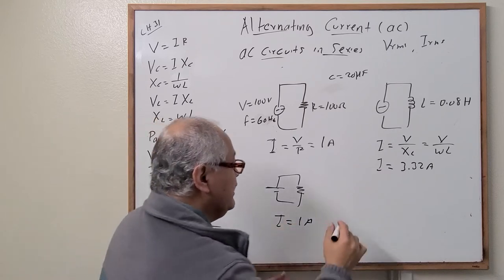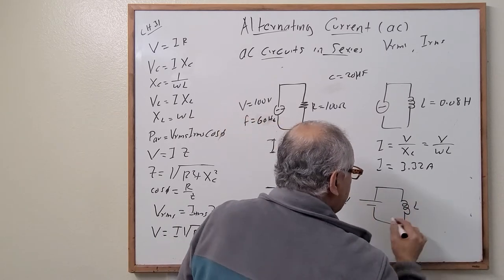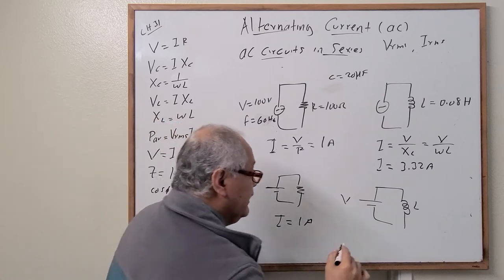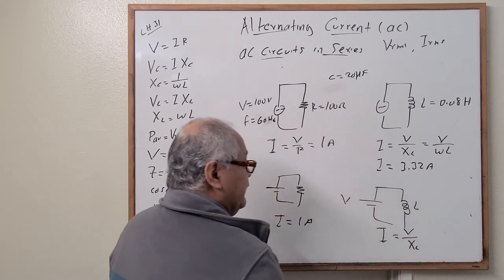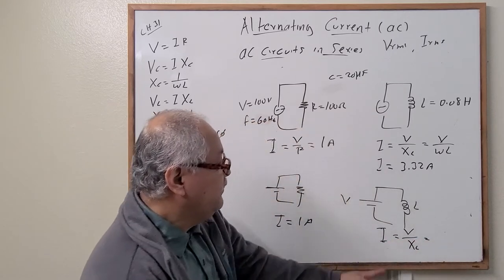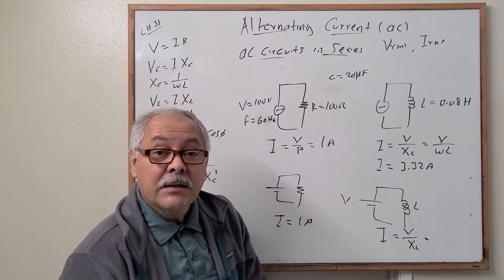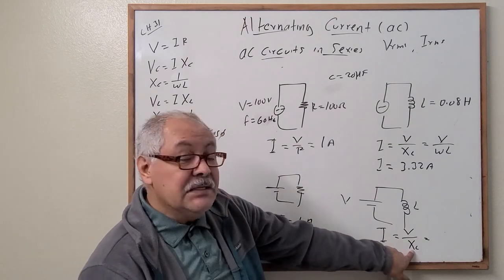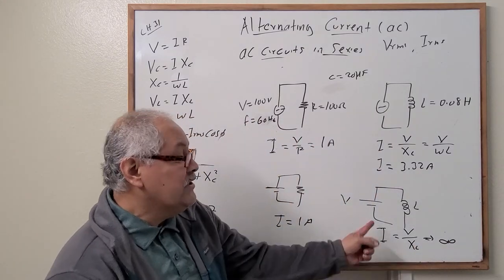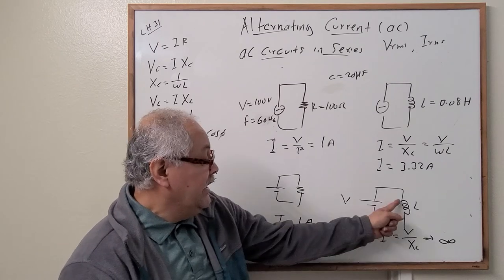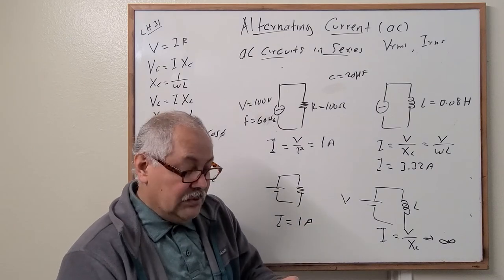Now let's do the same thing using a battery. With DC, the inductor behaves as a wire, so there is no resistance. The reactance is zero, which means the current goes to infinity. We are in a short circuit condition, because the inductor behaves as a wire with essentially zero resistance.